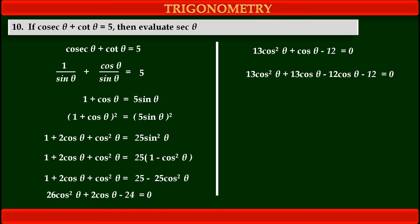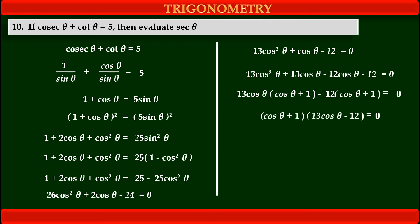Now we take common factors from the first two terms and the last two terms. From the first two terms, the common factor is 13 cos θ, giving 13 cos θ into (cos θ plus 1). From the last two terms, minus 12 is common, giving minus 12 into (cos θ plus 1), all equal to 0. Now on the left-hand side, both terms have the common factor (cos θ plus 1).